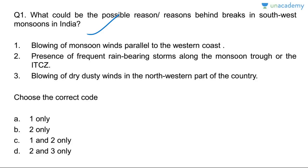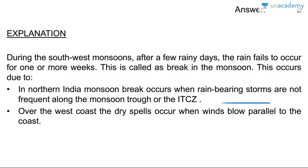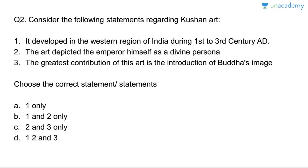Only the first option is correct; second and third are absolutely wrong. Answer is A, one only. During the southwest monsoons, after a few rainy days, rainfall ceases for one or more weeks — this is called a break in the monsoon. In northern India, breaks occur when rain-bearing storms are not frequent along the monsoon trough or ITCZ. Over the west coast, dry spells occur when winds blow parallel to the coast.